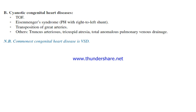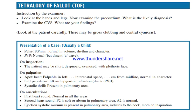The commonest congenital heart disease is ventricular septal defect. Tetralogy of Fallot — instruction by the examiner: look at the hands and legs, then examine the precordium. What is the likely diagnosis? Examine the CVS and report your findings. Look at the patient carefully — there may be gross clubbing and central cyanosis.